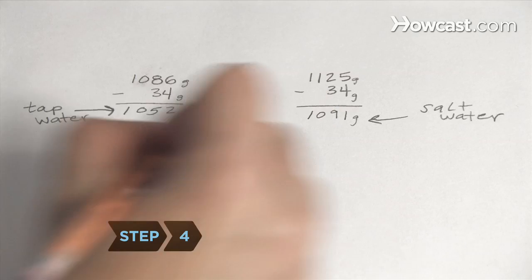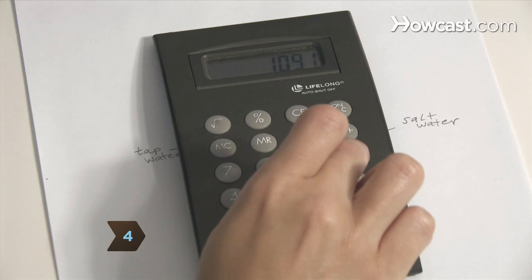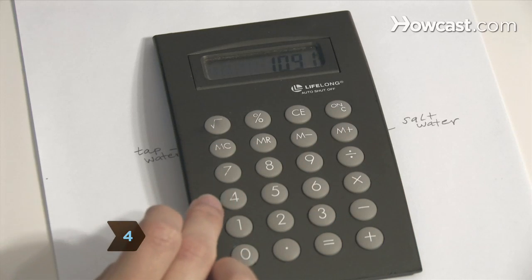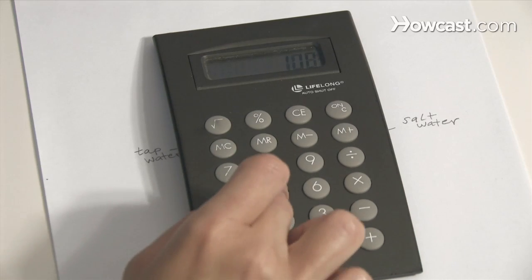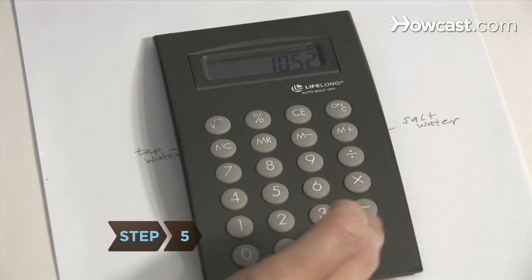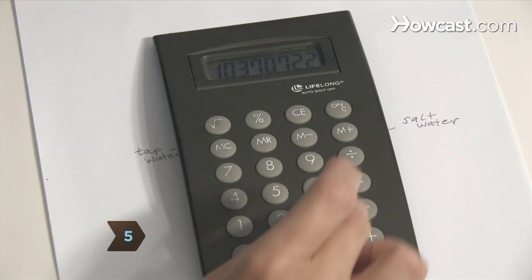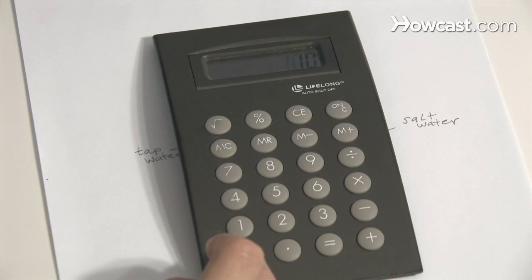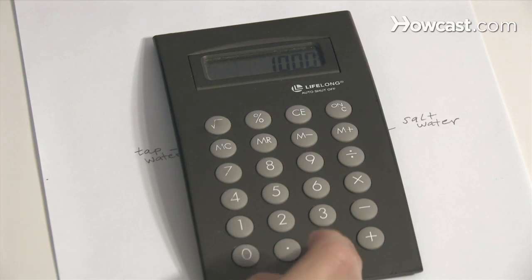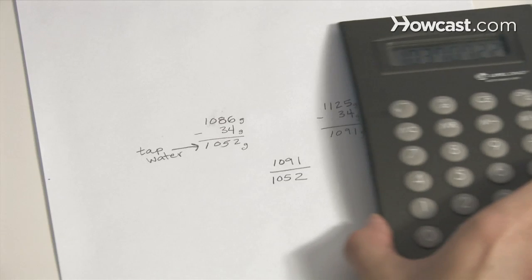Step 4. Calculate the ratio of the weight of the saltwater-filled bottle to that of the tap water-filled bottle. Step 5. Multiply the ratio by the density of pure water, 1,000 g per liter, to get the density of the saltwater in grams per liter.